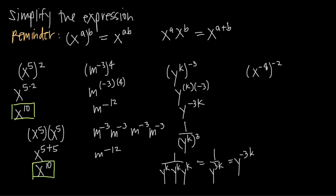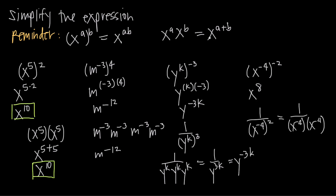Let's do one final example: x to the negative 4 raised to the negative 2. Using power rule, negative 4 times negative 2 is positive 8, so we get x to the positive 8. Breaking it down the other way, we move x to the negative 4 to the denominator with a positive 2 exponent, giving 1 over x to the negative 4 times x to the negative 4. Adding negative 4 plus negative 4 equals negative 8, so we have 1 over x to the negative 8. Moving that to the numerator and changing the sign gives x to the positive 8 — the same answer as power rule.